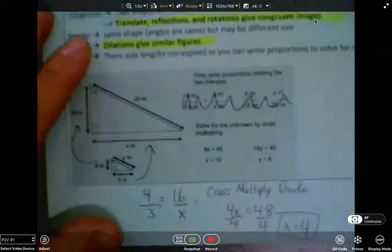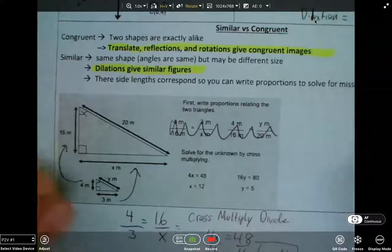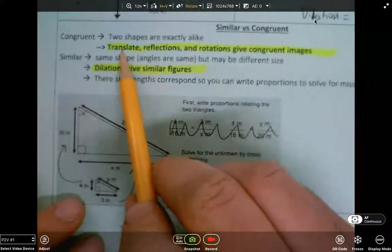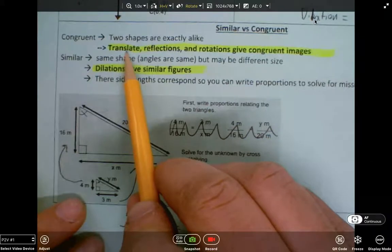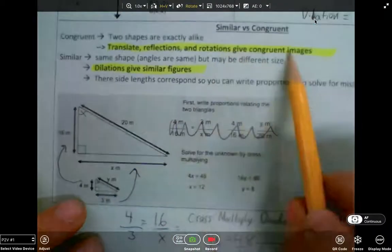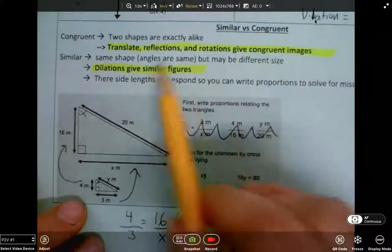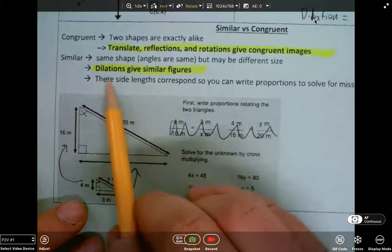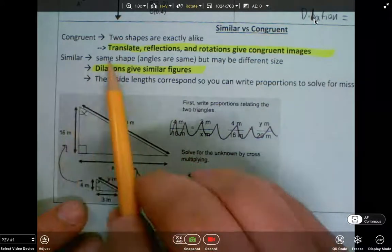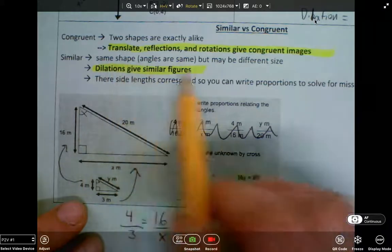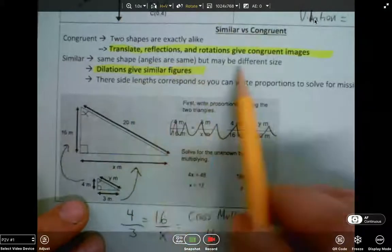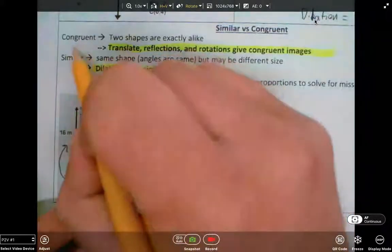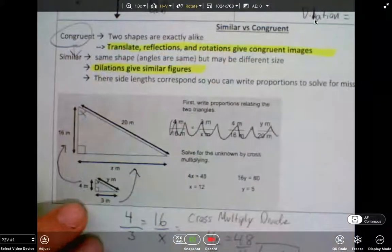That brings us to similar congruent figures. When you do similar congruent figures, you have to remember that when you translate, reflect, or rotate, you always get congruent images. However, when you dilate, that's going to give you similar figures because similar figures have the same shape but a different size. And remember, anything that's congruent is also similar.